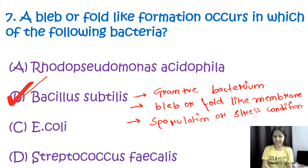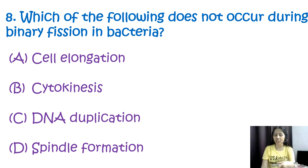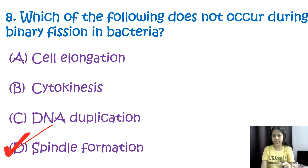Question number eight: which of the following does not occur during binary fission in bacteria? Options are cell elongation, cytokinesis, DNA duplication, or spindle formation. The correct option is D, spindle formation. Spindle formation is a process associated with mitosis or meiosis in eukaryotic cells.